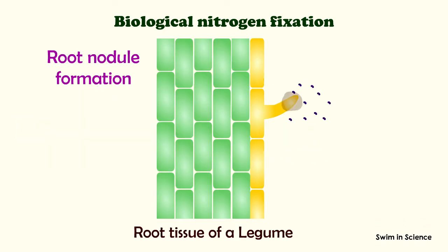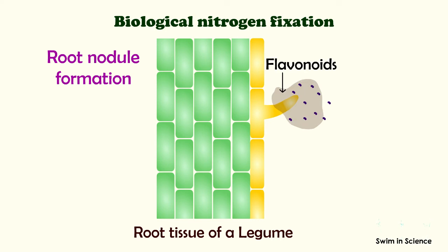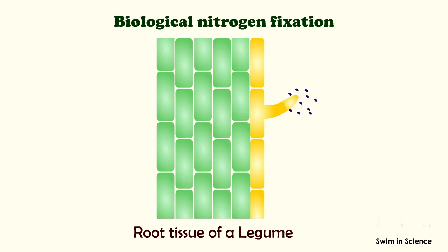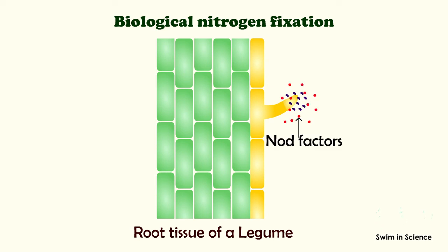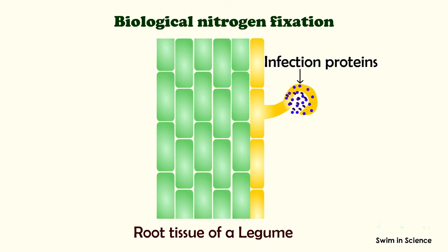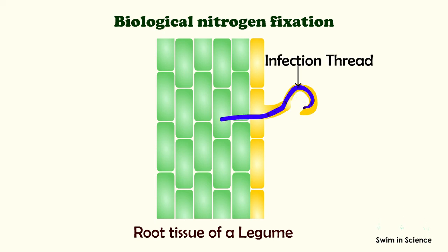Under nitrogen-limiting conditions, plant roots release flavonoids which attract the rhizobia towards them. In response to flavonoids, the bacteria produce nod factors that initiate root hair curling. The bacteria then produce infection proteins that induce the plant roots to develop an infection thread, through which the bacteria gain entry into the root cortex cells.